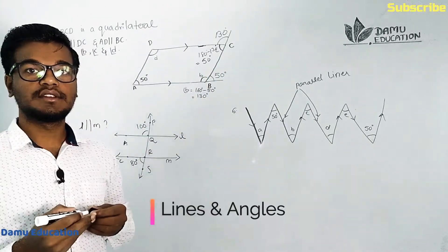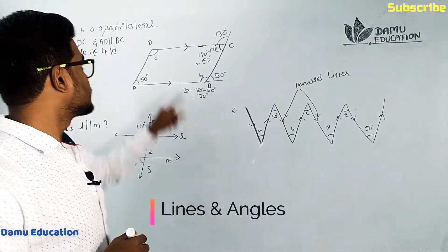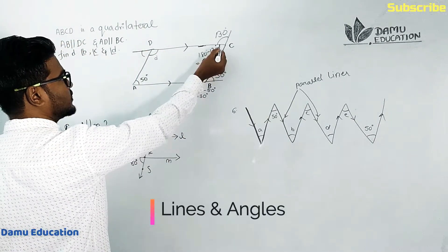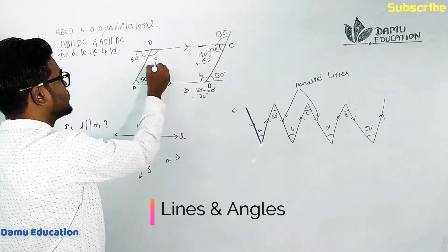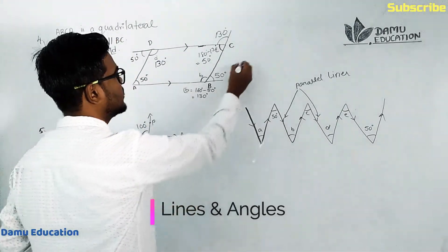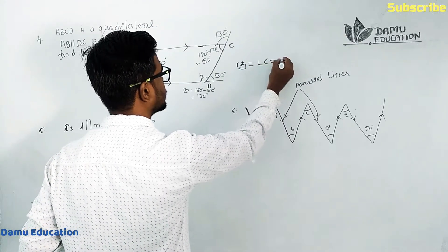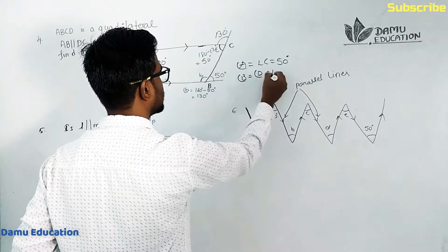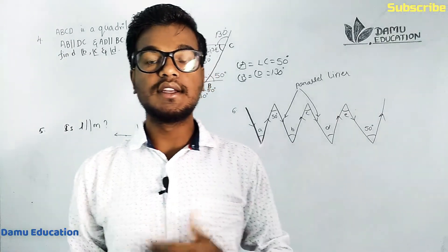Angle C equals 180 minus 130, which gives 50 degrees. So angle C equals 50 degrees. Similarly, extending the lines, angle C and angle D are corresponding angles — angle C is 50 degrees, so angle D is 130 degrees. Finally, angle A equals angle C equals 50 degrees, and angle B equals angle D equals 130 degrees.